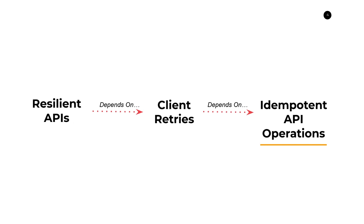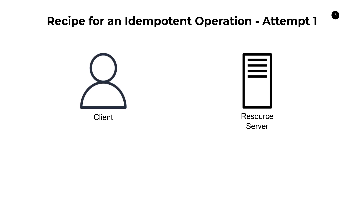Let's take a naive approach at creating an idempotent API — attempt number one. In order to create an idempotent operation, how do we guarantee that we don't create a bank account twice? The key is we need to identify something at the resource server that is unique, that allows us to group these requests together so we can detect that we don't want to create two bank accounts. So what's a naive way of doing that?